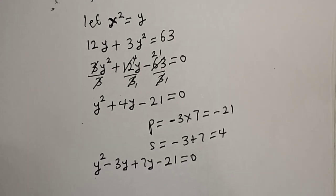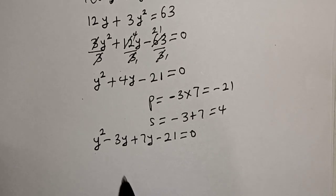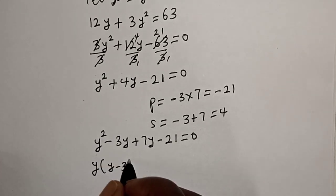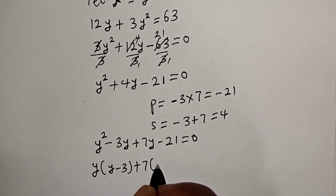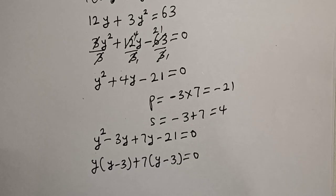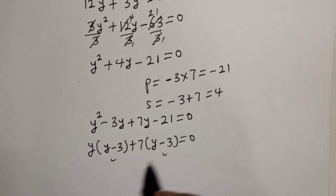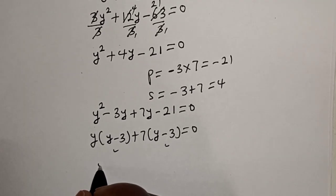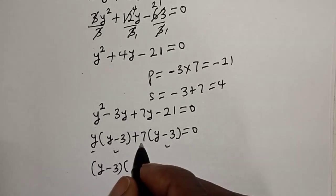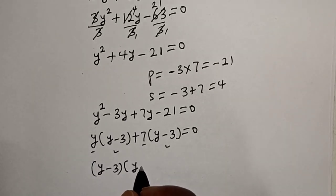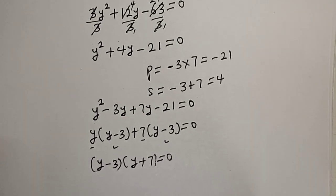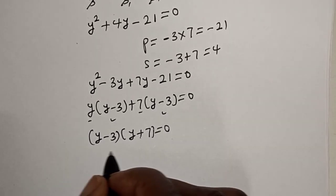We have y² − 3y + 7y − 21 is equal to 0. Then y(y − 3) + 7(y − 3) is equal to 0. Since (y − 3) is common, we have (y − 3)(y + 7) is equal to 0.